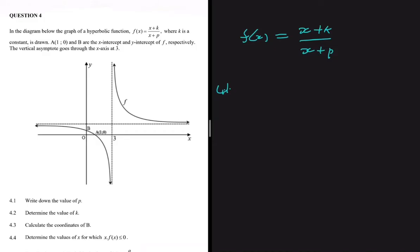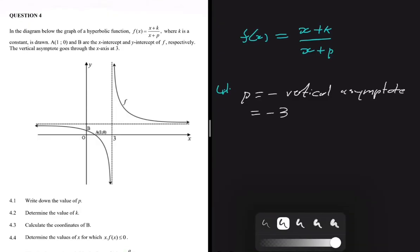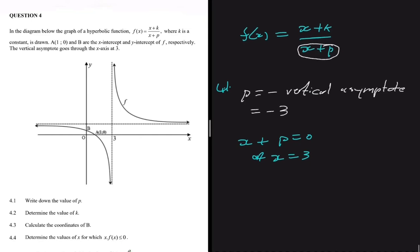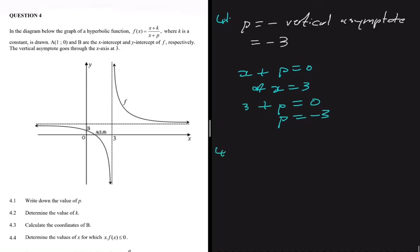p is always going to equal minus the vertical asymptote. From our information, the vertical asymptote is at x equals 3, so p equals minus 3. Another way to see this: the vertical asymptote comes from the denominator being zero, so x plus p equals 0. Substituting x equals 3 gives 3 plus p equals 0, so p equals minus 3.